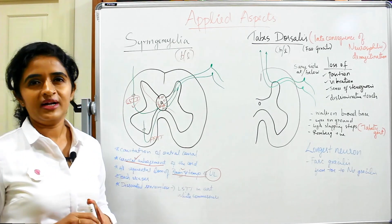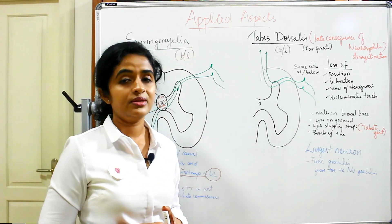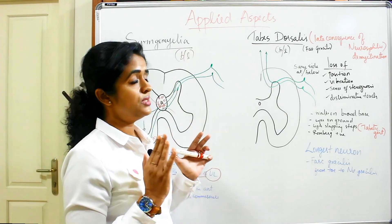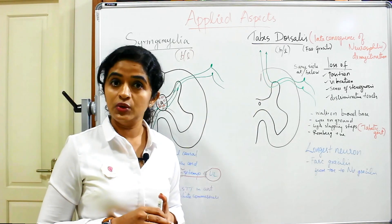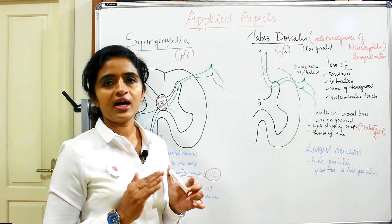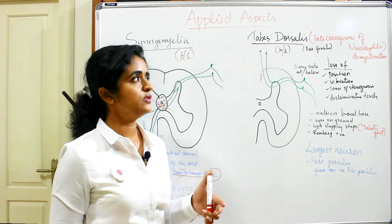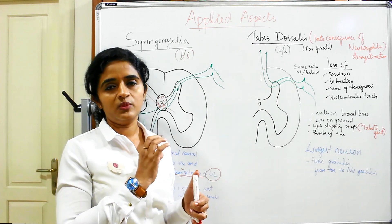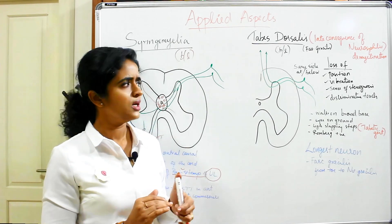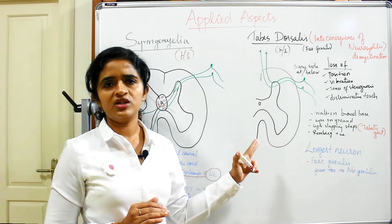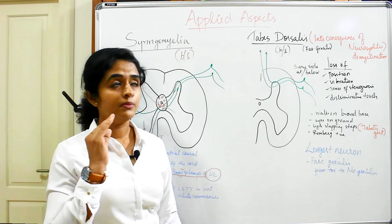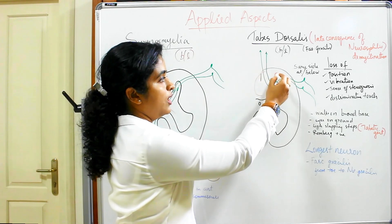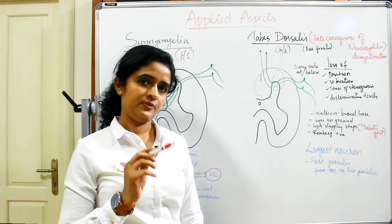That is about syringomyelia in a nutshell. Coming to another condition known as tabes dorsalis — when you hear about tabes dorsalis, you have to think about syphilis, because it is a late consequence of neurosyphilis. As a sequela of neurosyphilis, there will be demyelination; the bacteria invade the nerve fibers, resulting in demyelination. In the spinal cord white matter, the fibers affected in tabes dorsalis are in the posterior column as well as the posterior root of the spinal cord.